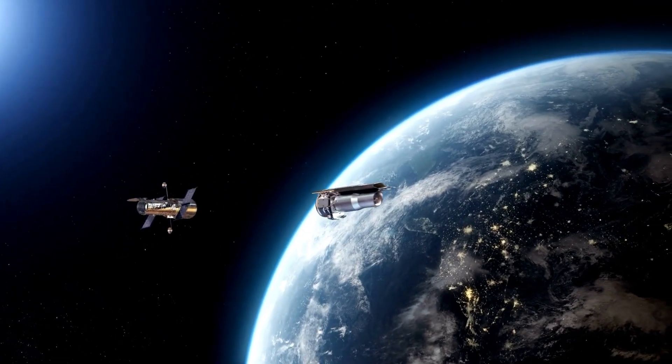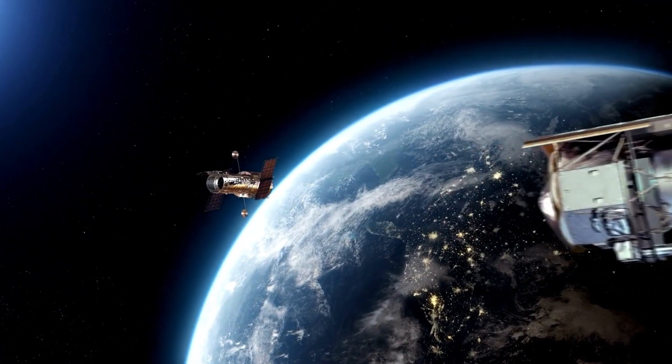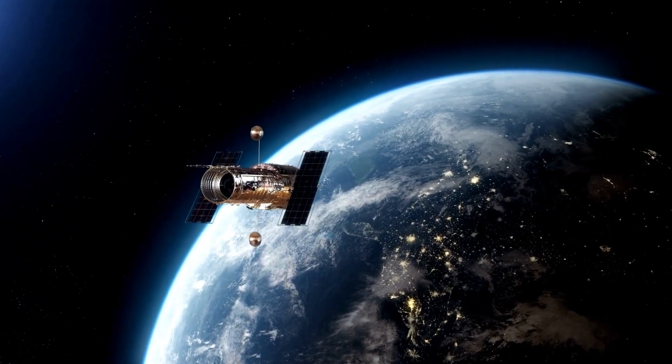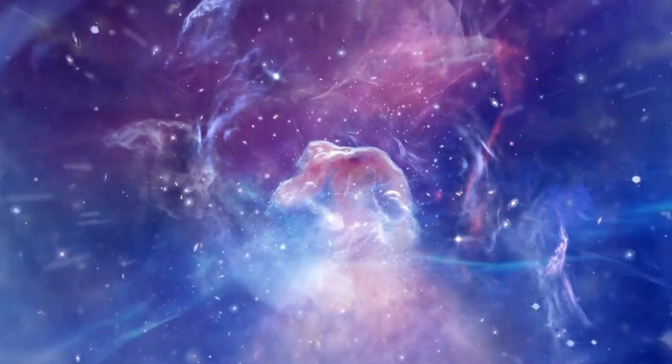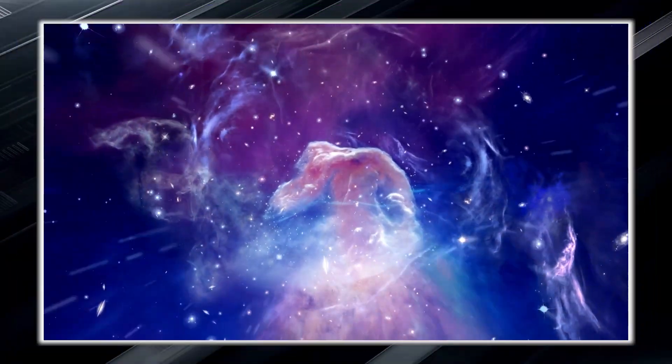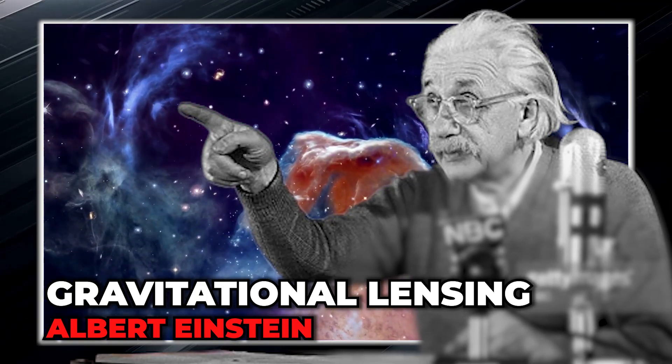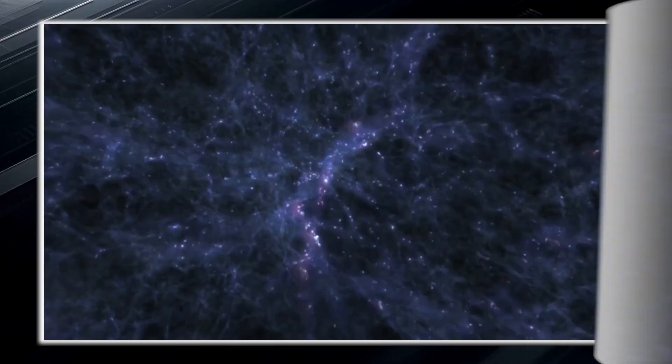Despite this enormous distance, the Spitzer, Chandra, and Hubble Telescope have managed to capture an image of this extraordinary galaxy by working together to collect data from different wavelengths of light. They even used the phenomenon of gravitational lensing, predicted by Albert Einstein, to obtain an image of Abel 2744Y1.